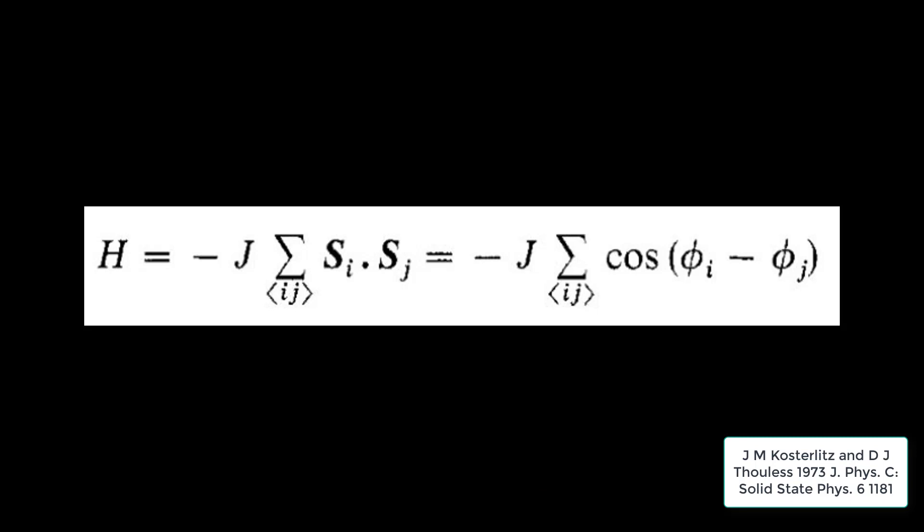The expression for the Hamiltonian is displayed. Here, J is the interaction energy between spins, and S_i represents the configuration of a given spin. Because spins are oriented in a plane, the dot product in the first expression can be rewritten involving a cosine of the difference between the thetas for each spin, where theta is measured relative to the x-axis.